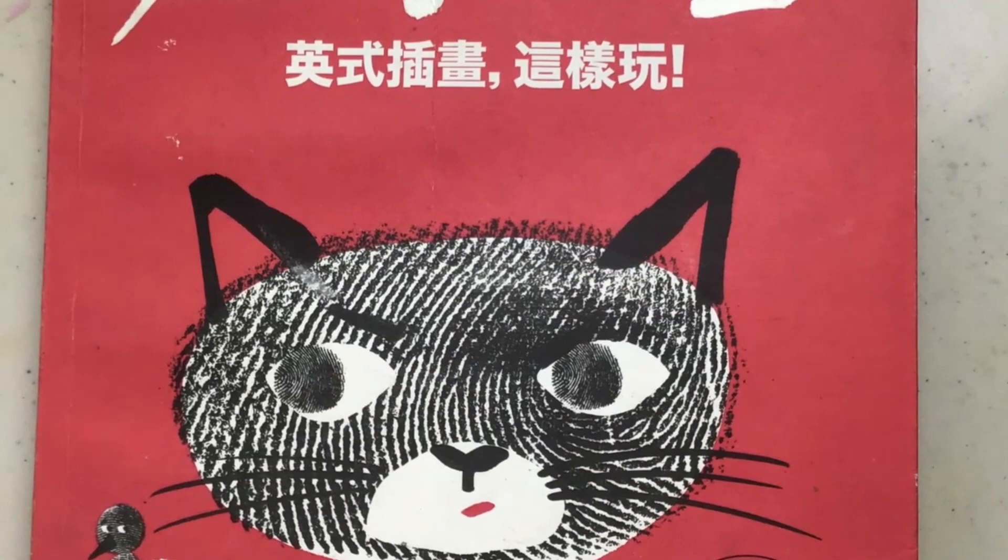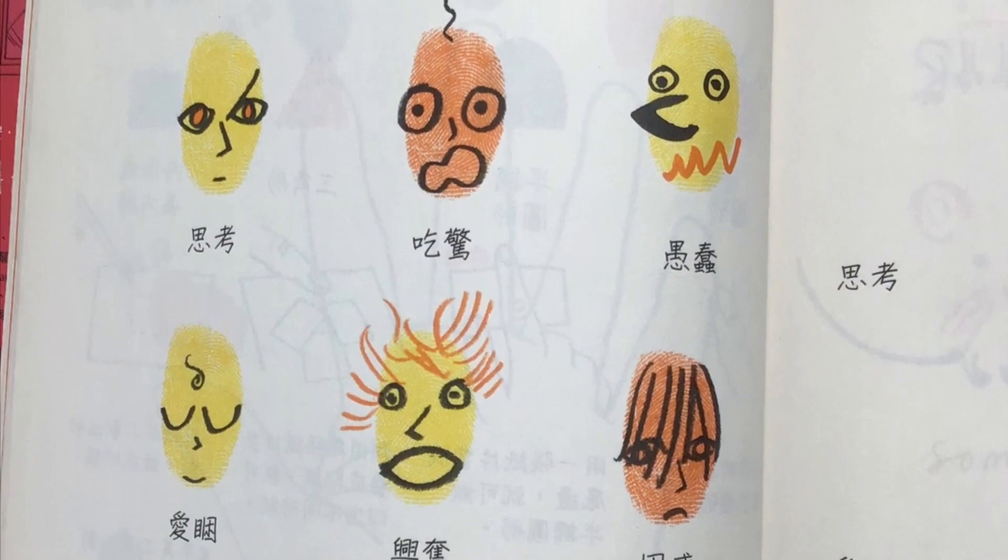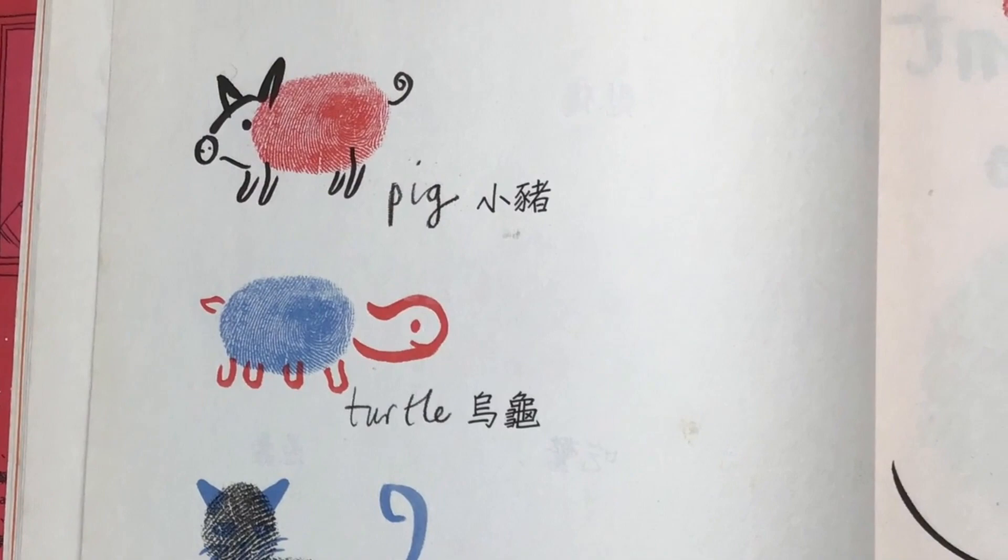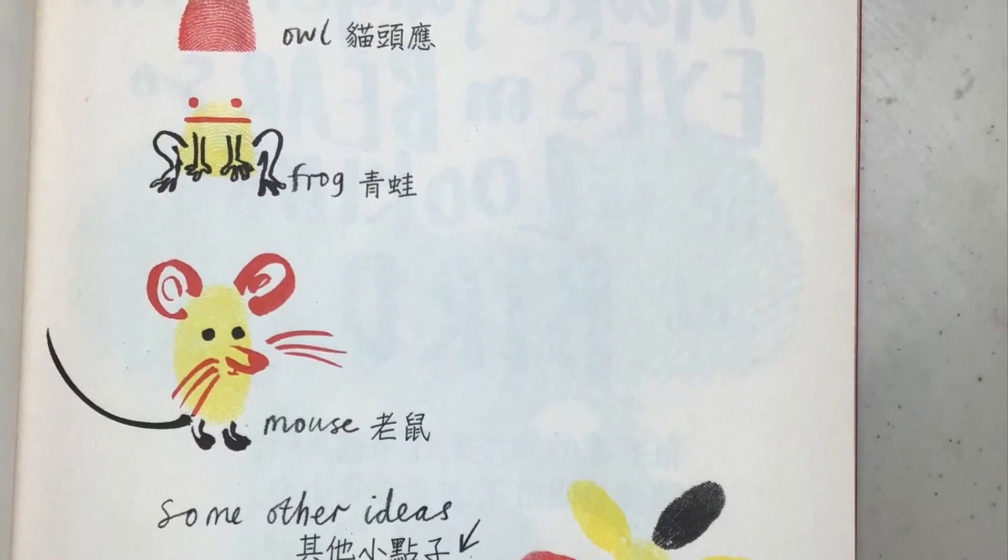These are from the other book that I showed you before. Here are some different faces. Good expressions. Some more animals. Different way to do it. More animals. Yeah, the frog looks good. Those are just a few ideas from these books.